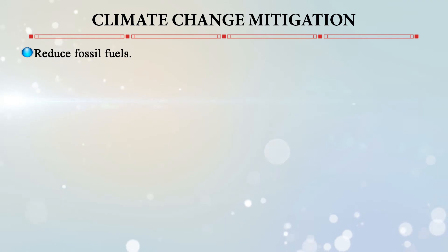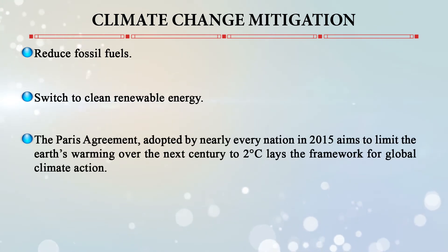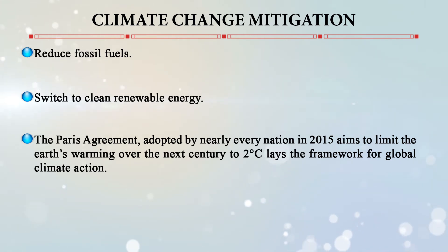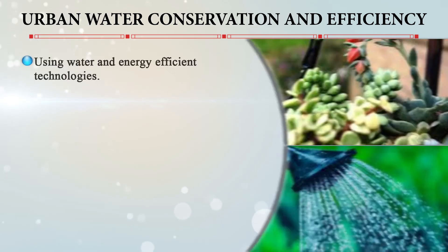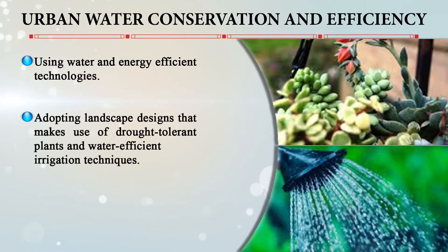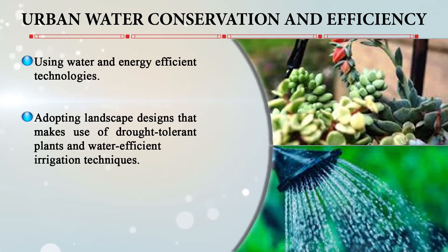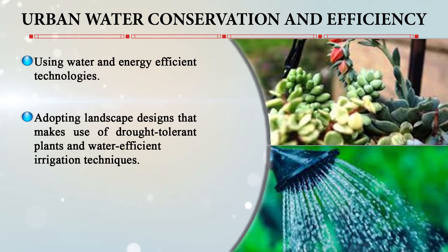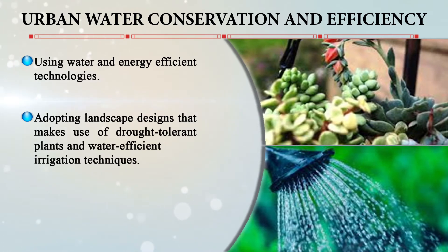Climate change mitigation involves reducing dependence on fossil fuels and switching to clean and renewable energy. The Paris Agreement, adopted by nearly every nation in 2015, aims to limit Earth's warming to two degrees over the next century. Urban water conservation and efficiency can be achieved by using water and energy-efficient technologies. Adopting landscape designs that use drought-tolerant plants such as cacti and desert varieties that require less water is recommended. Water-efficient irrigation techniques like sprinklers rather than hoses help reduce excess water use in horticulture and agriculture.